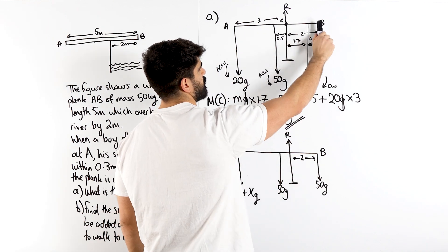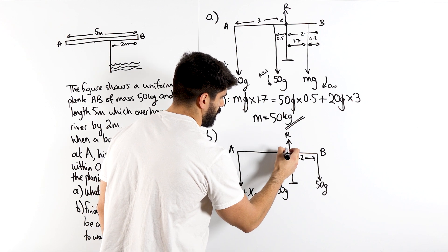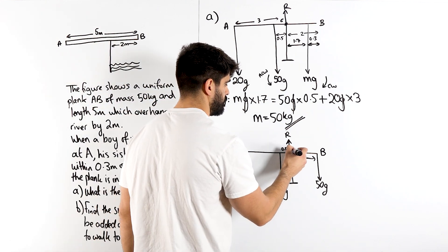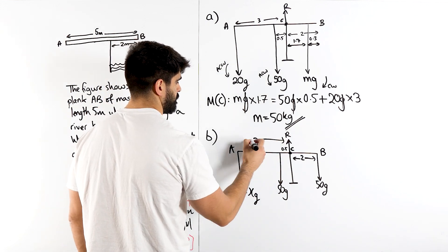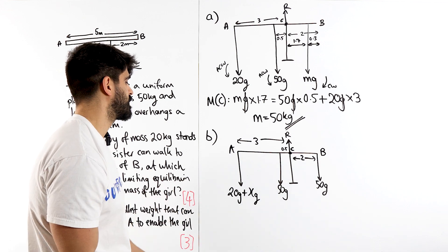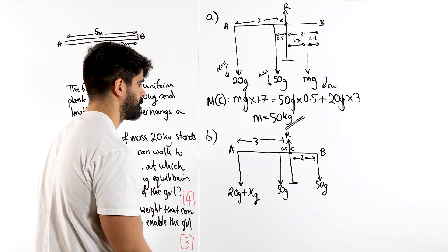Because we took this and moved it over to B, didn't we? This 50G is still a half away from C. Then this is still a distance of 3. So you could do them together or separately. You could have said 20 plus XG. We're going to be expanding it anyway.